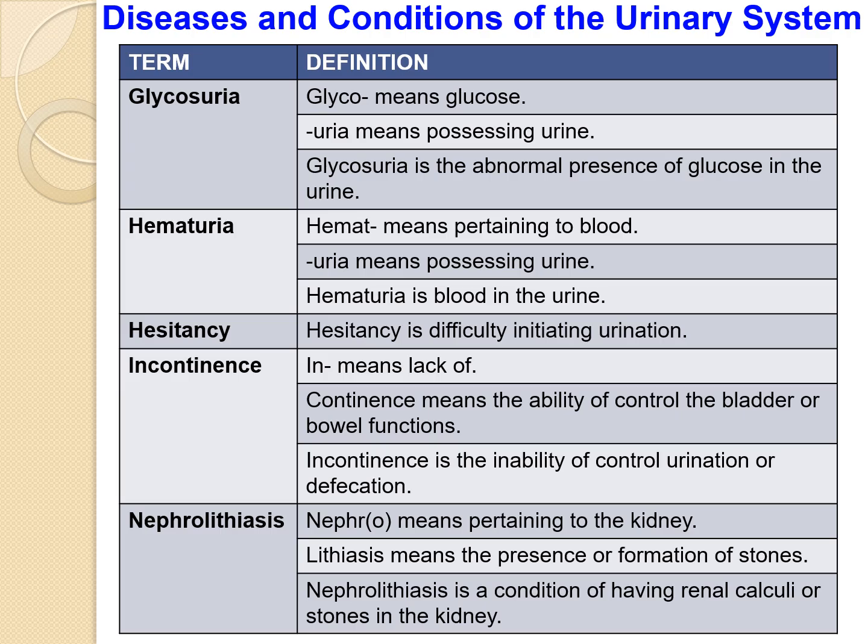The next term is glycosuria. 'Glyco' means sugar, 'urea' means possessing urine, so glycosuria is the abnormal presence of glucose in urine. The next is hematuria — 'hemat' means pertaining to blood, 'urea' means possessing urine, so hematuria is blood in the urine.